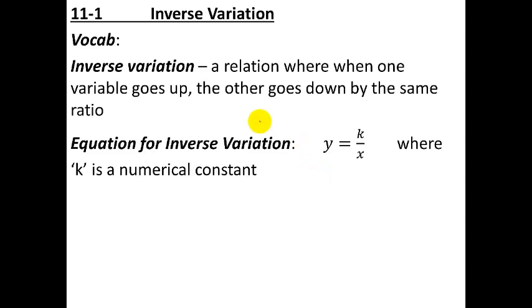So this first section of Chapter 11 is all about inverse variation. The idea of inverse variation is it's a relationship between two variables, where when one variable goes up, the other goes down by the same ratio. This is very similar to something we saw earlier in the year called direct variation. But with direct variation, they both went up or they both went down. With inverse, this kind of means the opposite. One goes up, the other goes down. And most importantly here, it's not by a certain amount, but instead by a certain ratio.